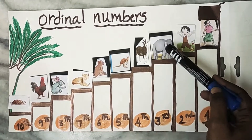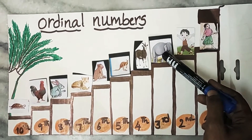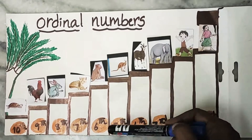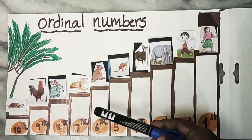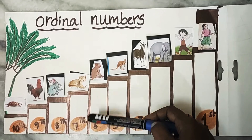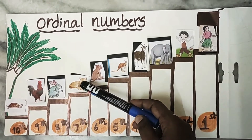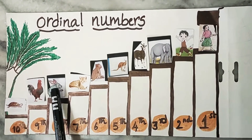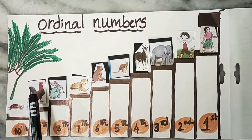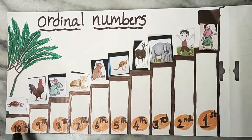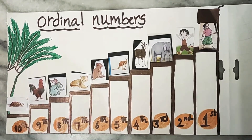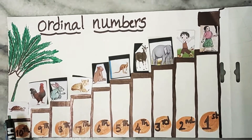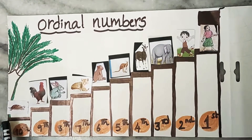And who is in 3rd place? Elephant. 4th place? Dog. 5th place? Kangaroo. 6th place? Monkey. 7th place? Cat. 8th place? Rabbit. 9th place? Hen. And in 10th place? Tortoise.